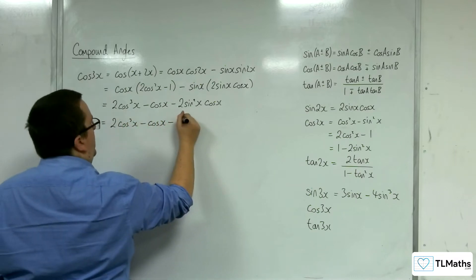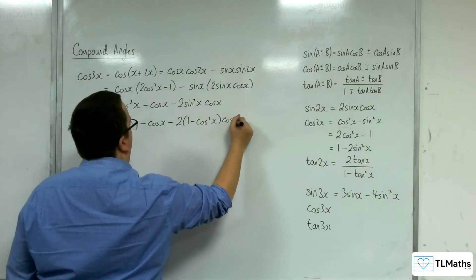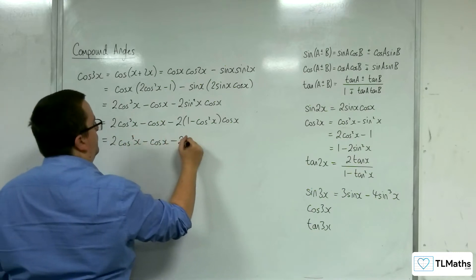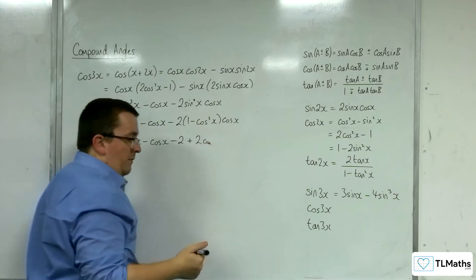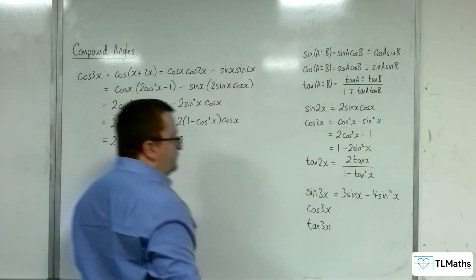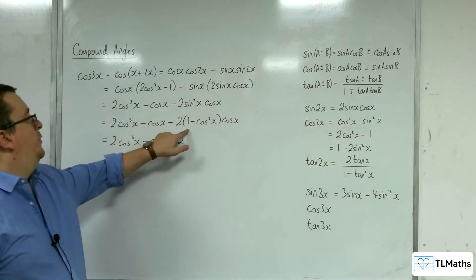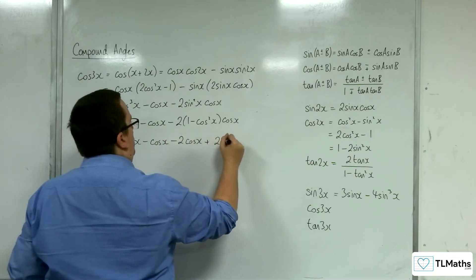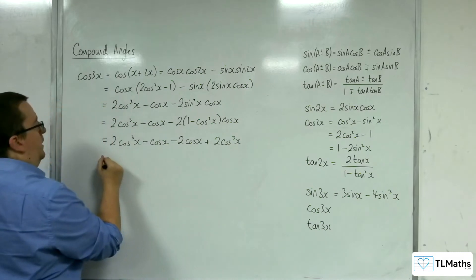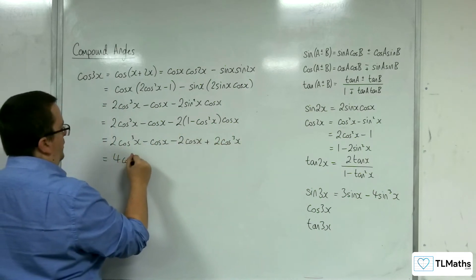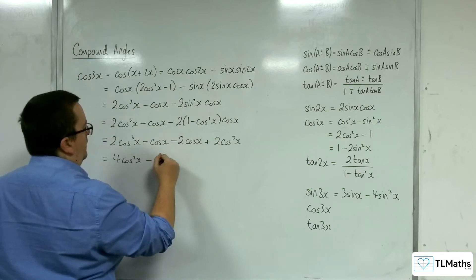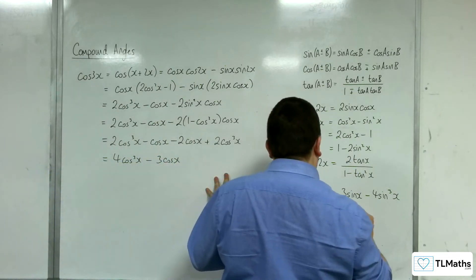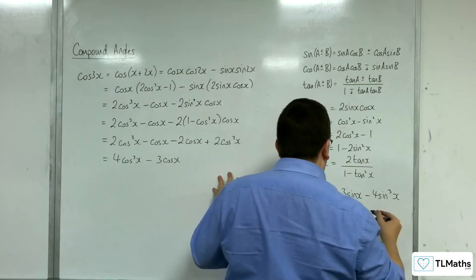Replace the sine squared with 1 minus cosine squared. Multiply through. Oh, see, I've lost. I've missed a term out. Got to be careful. What have we got here? Minus 2 times 1 times cosine x. So we've got 2 cosine cubed plus 2 cosine cubed. So 4 cosine cubed x, take away 3 cosine x. And so that is the triple angle formula for cosine.